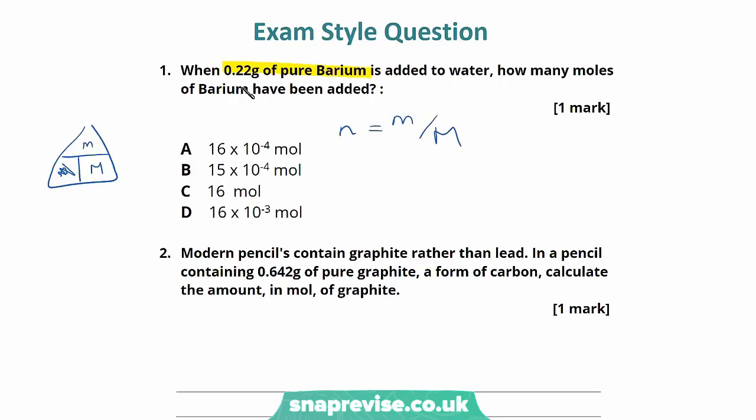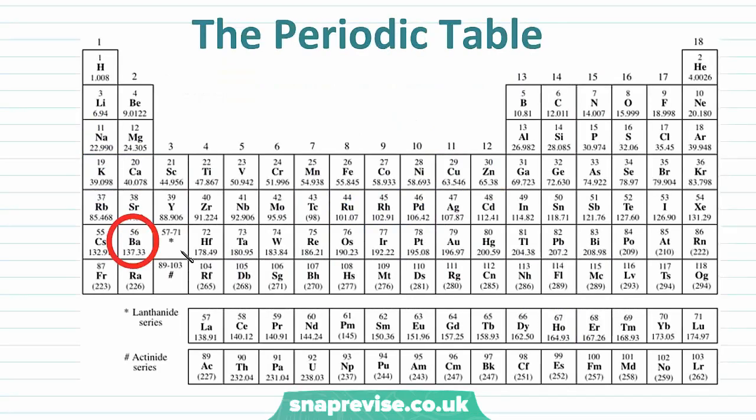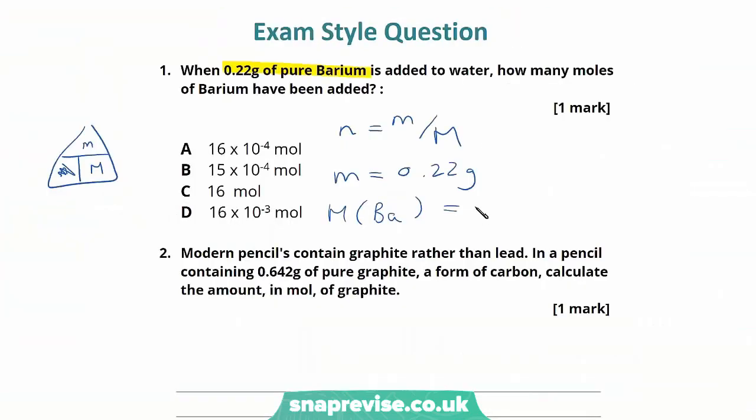So we know the mass is 0.22 grams. We now need to find the molar mass of barium, and we can do that by having a look in our periodic table. If we take a look at our periodic table, we have barium over here with a molar mass of 137.33. So we can go ahead and write that in, 137.33.